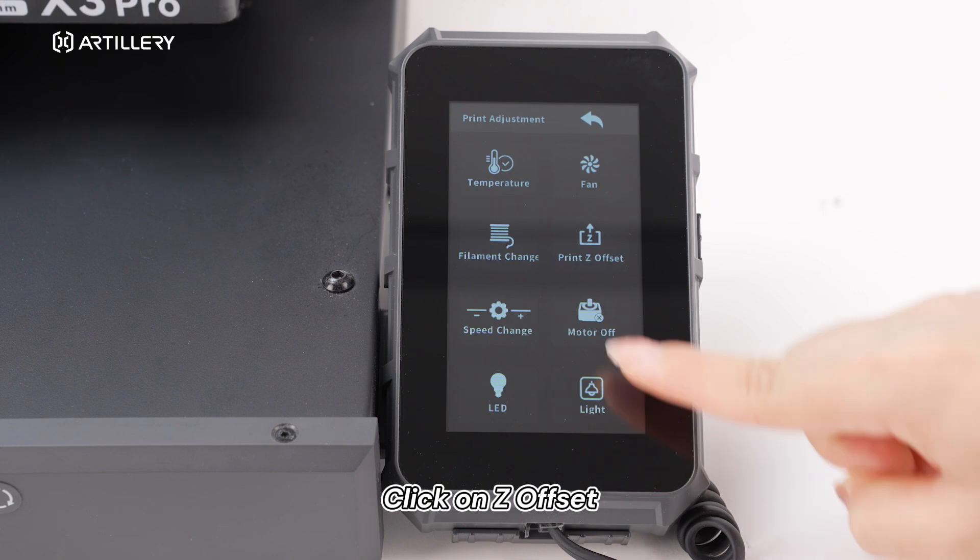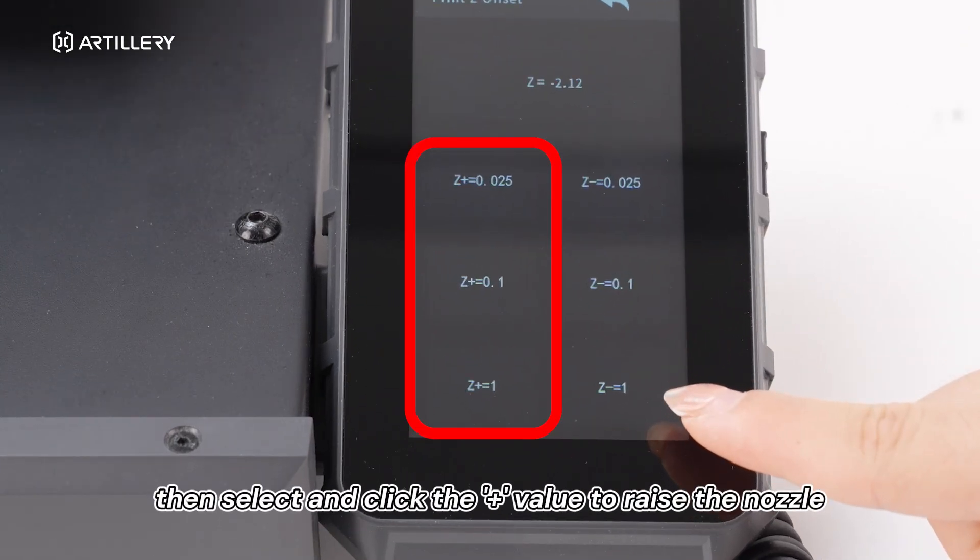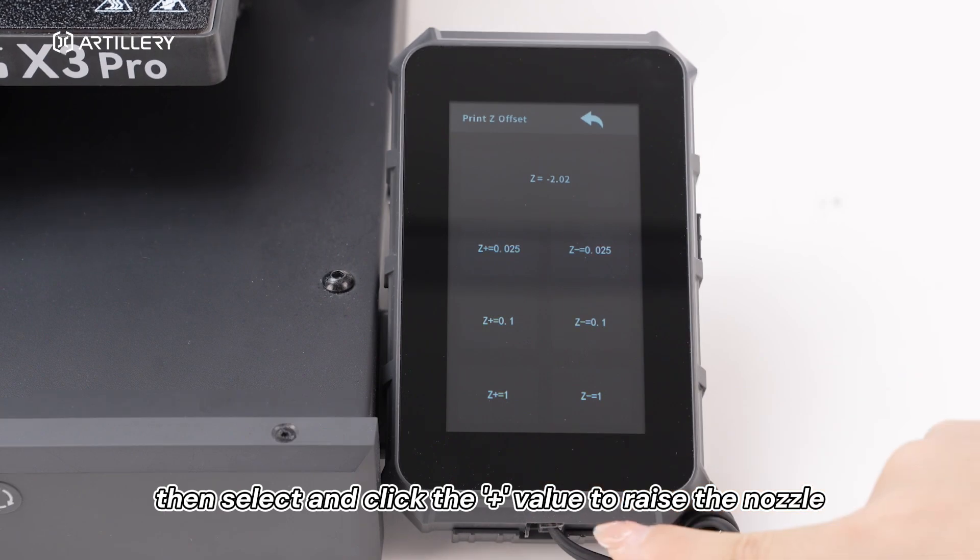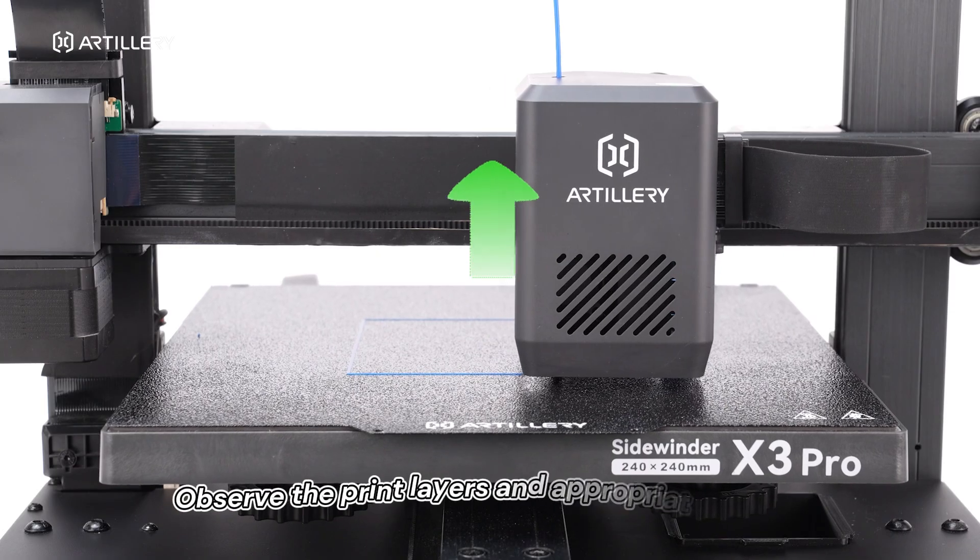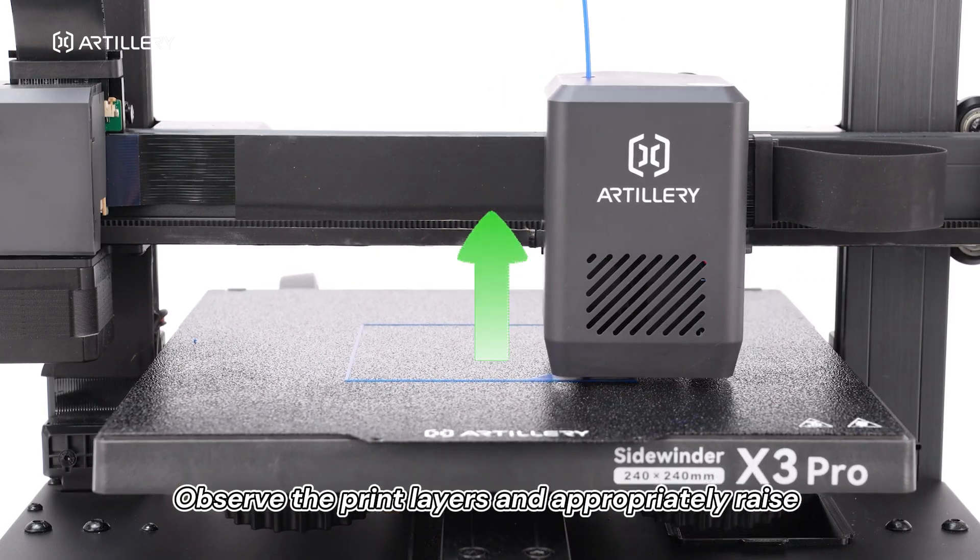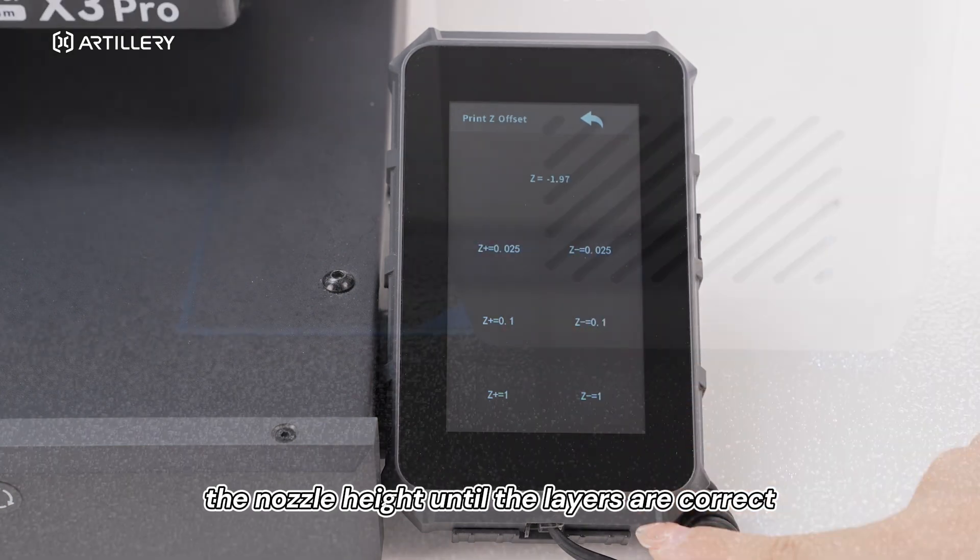Click on Z-Offset, then select and click the plus value to raise the nozzle. Observe the print layers and appropriately raise the nozzle height until the layers are correct.